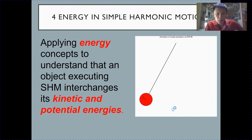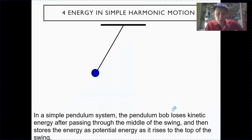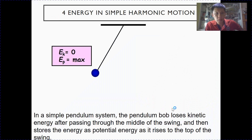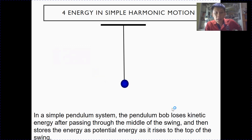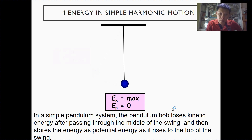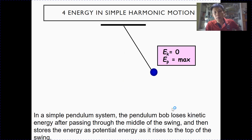Let's go to the next slide for further details. At this position, the kinetic energy is zero and the potential energy is maximum. As the pendulum swings down towards the equilibrium position, potential energy is converted to kinetic energy. As it swings further past the equilibrium position, kinetic energy is converted back to potential energy.